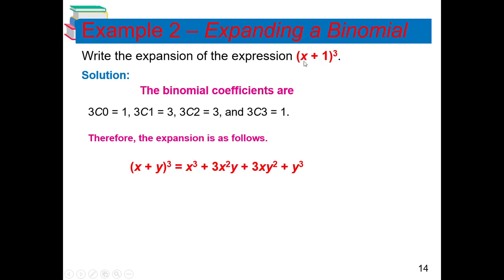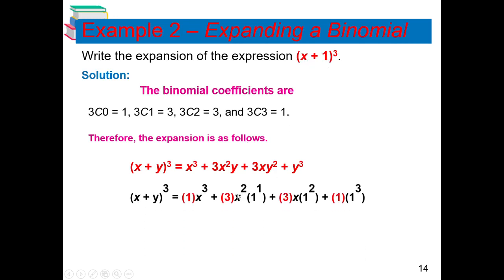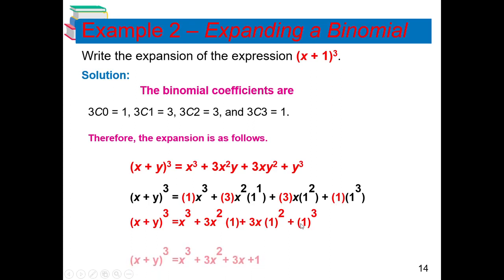Now substitute: x = x and y = 1. So the final answer for (x + 1)³ is: x³ + 3x² + 3x + 1. Applying the coefficients 1, 3, 3, 1 with x powers going 3, 2, 1, 0 and y (which is 1) raised to 0, 1, 2, 3 — the answer is confirmed as x³ + 3x² + 3x + 1.